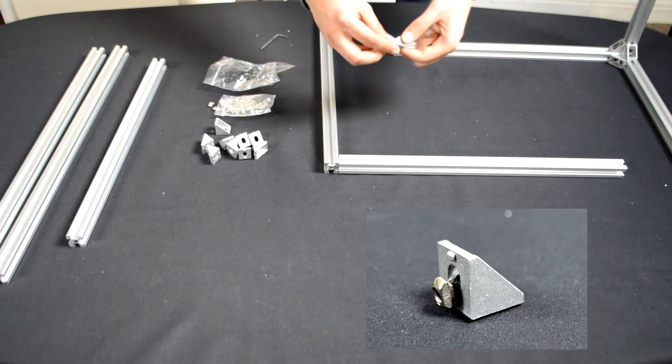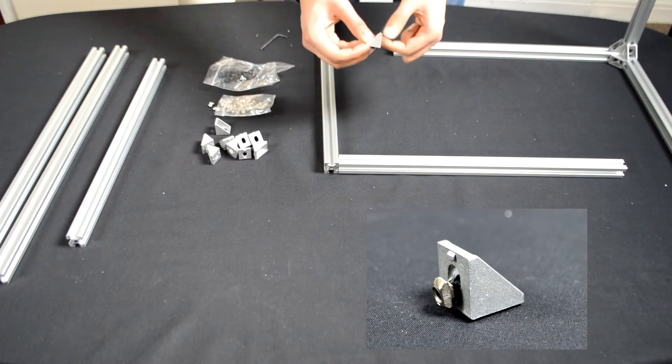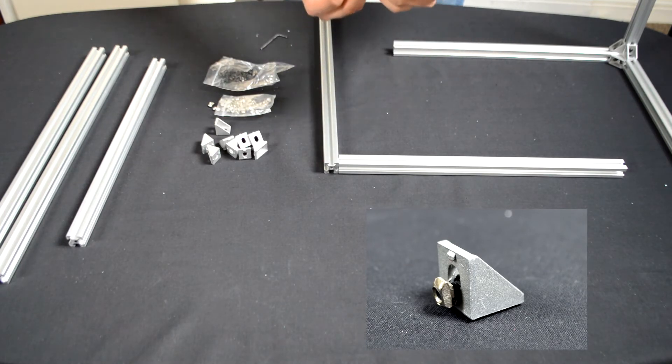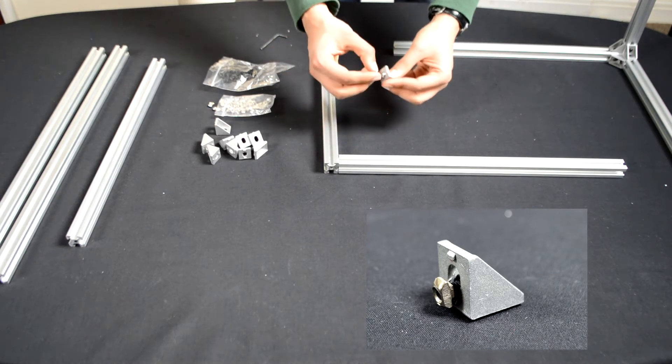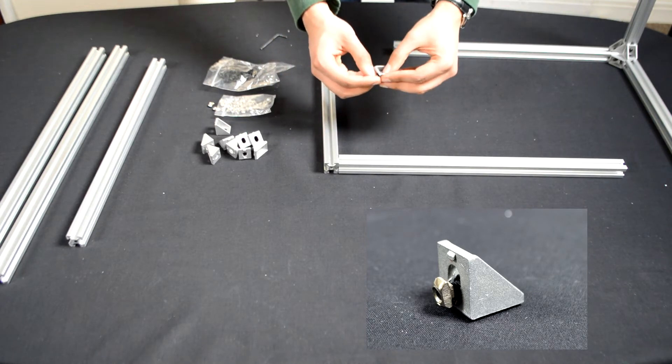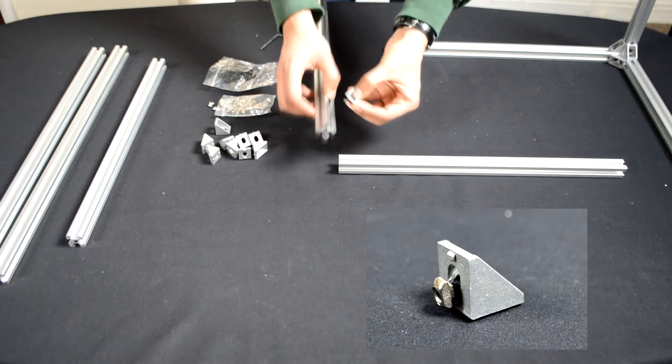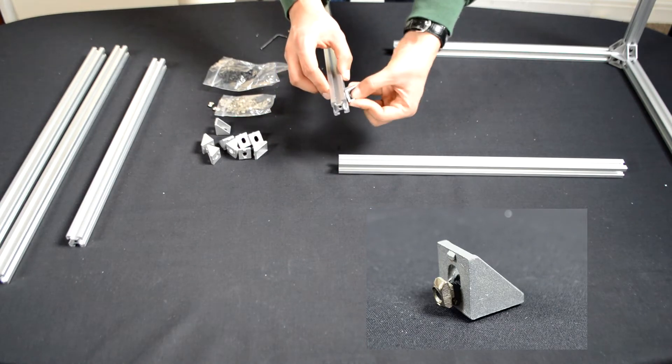Slide the bolt through the corner, and then fasten on the nut and you just want to fasten it on halfway down and then drop it into the extrusion.